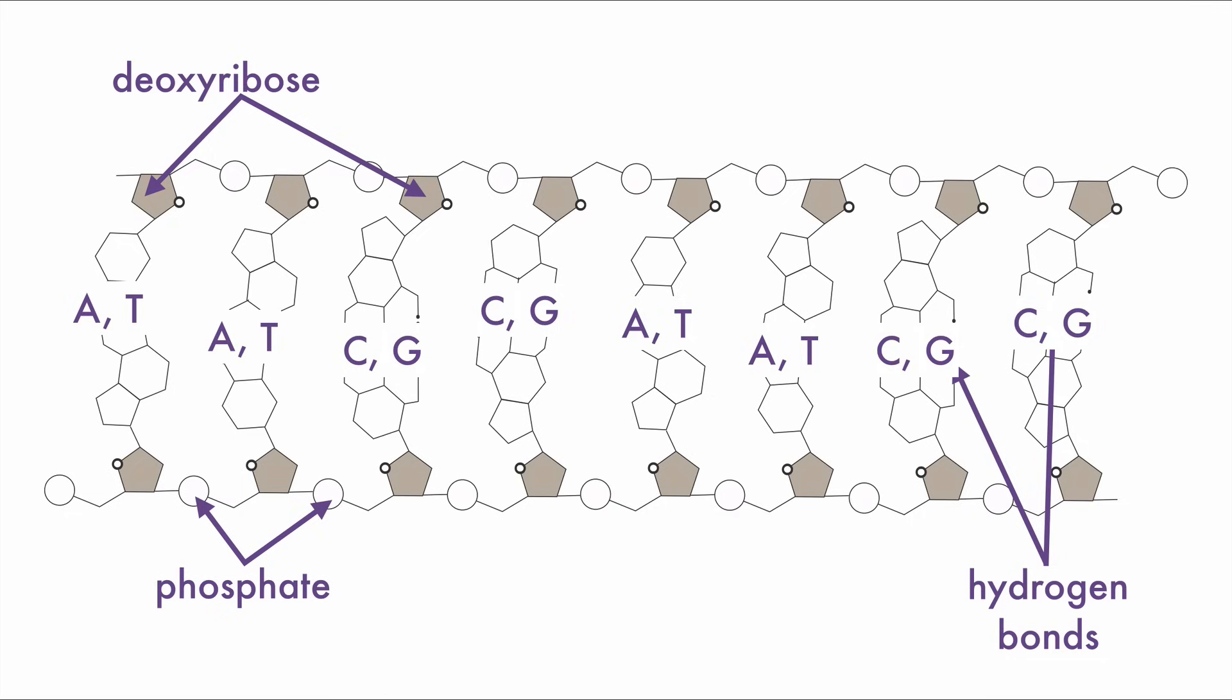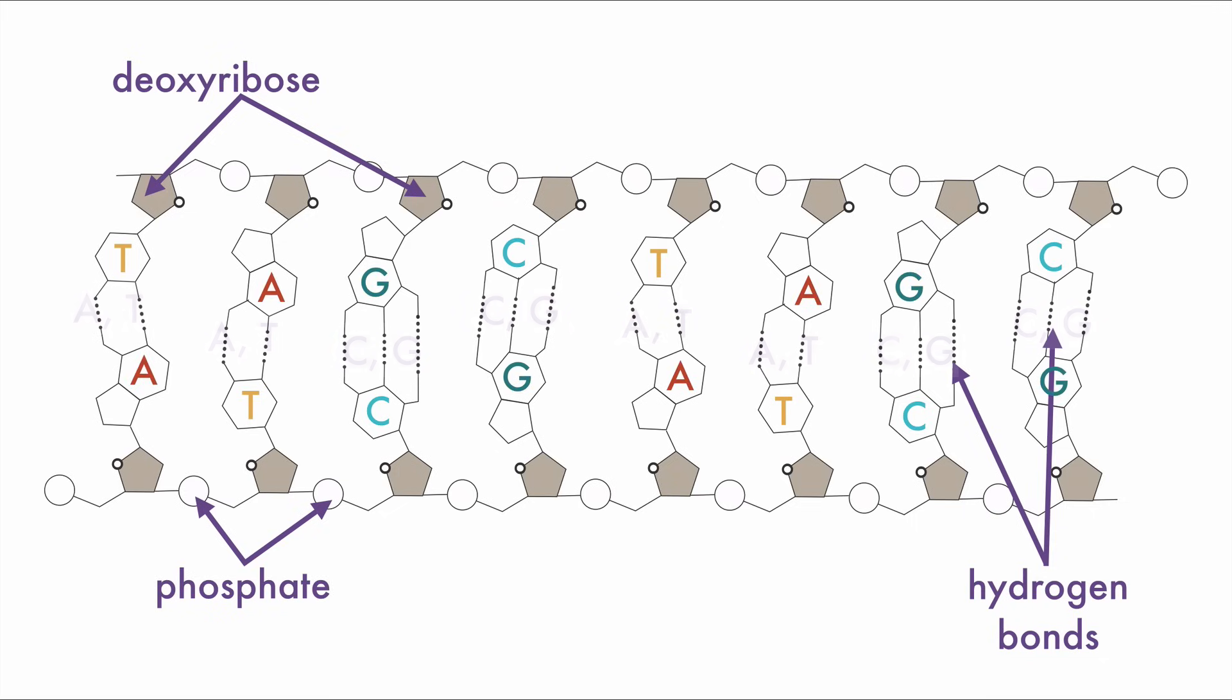To tell which one is which, you need to know that pyrimidines have one ring and purines have two. So cytosine and thymine are the pyrimidines, the one ring bases. Adenine and guanine are the two ringed bases. And now you have a labeled DNA molecule.